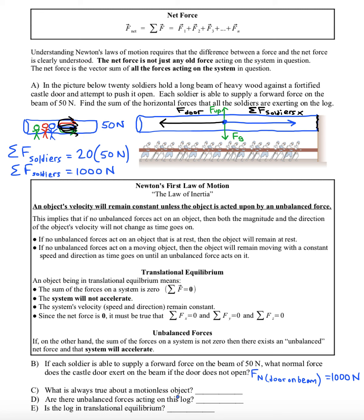What is always true about a motionless object? Well, we know that the velocity is zero and the acceleration is zero.